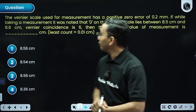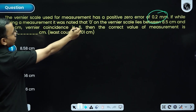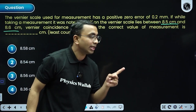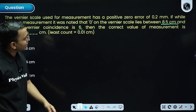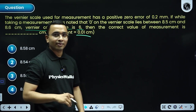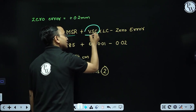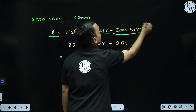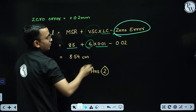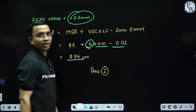Next question: a Vernier scale used for measurement has a positive zero error. Taking a measurement, zero on the Vernier scale lies between 8.5 and 8.6 — that gives the main scale reading. The Vernier coincidence is 6 and the least count is given. The formula is: length = main scale reading + (Vernier coincidence × least count) − zero error. Main scale reading is 8.5, coincidence is 6, least count is 0.01, zero error is +0.02 cm. Putting the values gives 8.54, which is option two.